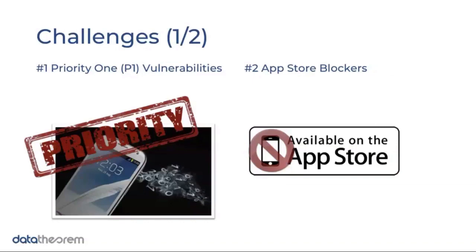We've taken a different approach: focus on things that are non-subjective and very clear in terms of fixing. Our first priority is what we call a P1 vulnerability. P1 vulnerabilities are any issue that allows a remote attacker — and the key word is 'remote' — to exfiltrate data from an app. If that is possible at any point during a security review, that is a P1 issue, and both developers and security teams can agree it should be fixed.